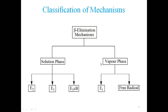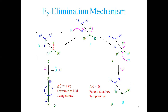In vapor phase, our substrate is converted to a gas. Since the base is normally a nitrogen base with high boiling point or is a solid, in vapor state we don't need any base. Base is not required in vapor phase, so the substrate alone can undergo E1 elimination, intramolecular, or free radical mechanisms — these are the two possibilities for beta elimination in vapor phase.